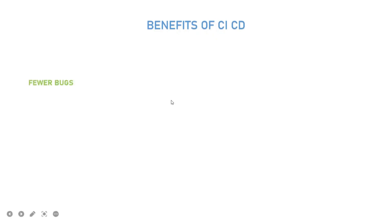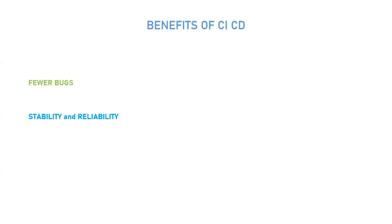Now let's look at the benefits of CI/CD. The first benefit is fewer bugs — since your code changes are integrated with testing, you get notified about bugs at an earlier stage. The second benefit is stability and reliability — once you have built the CI/CD pipeline, you can rely on it, as it is a one-time effort.